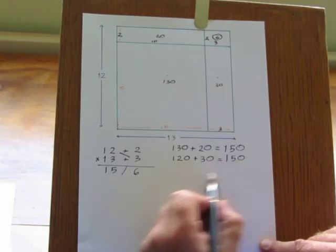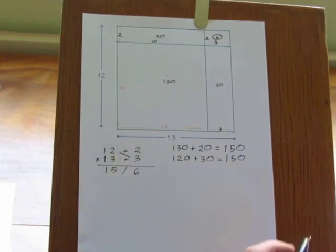So it's a very simple method for multiplying numbers which are a little bit above the base.